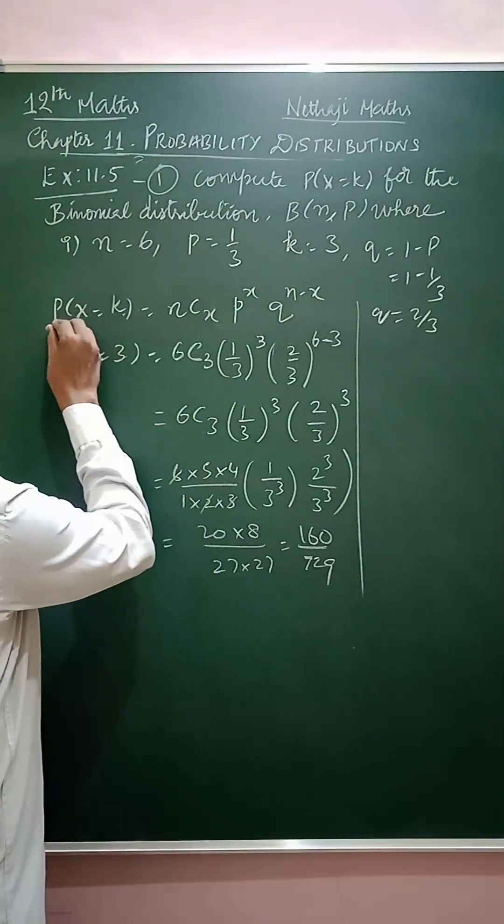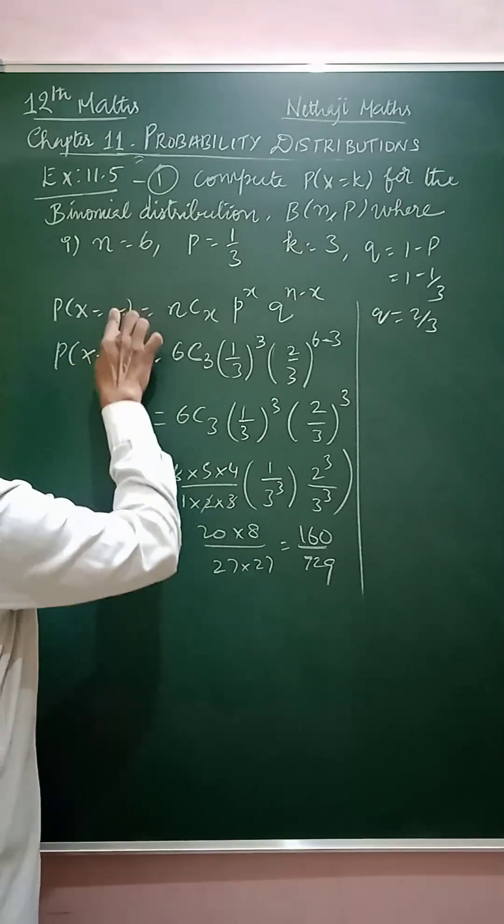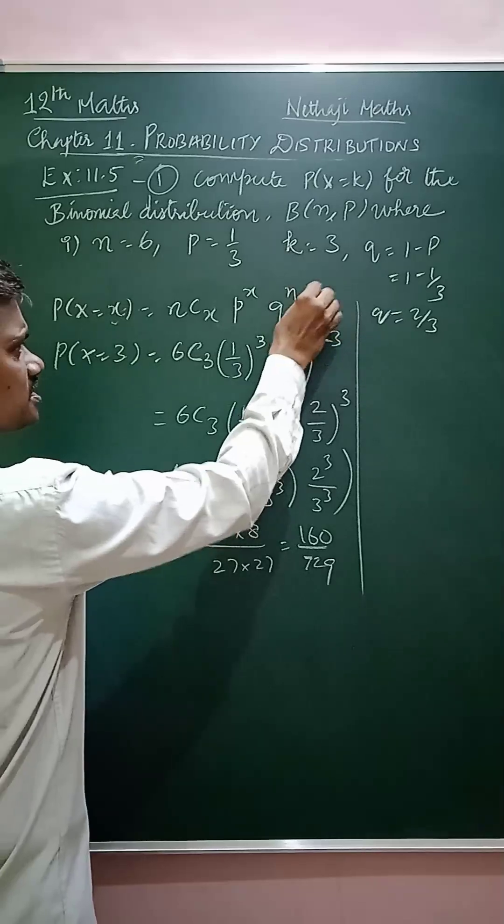For the binomial distribution, the formula is P(x=k) equals nCx times p^x times q^(n-x). That is the formula.